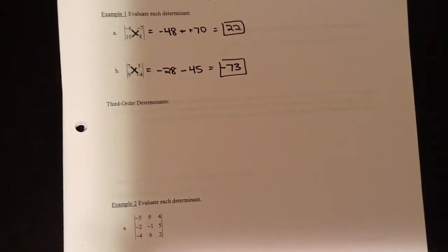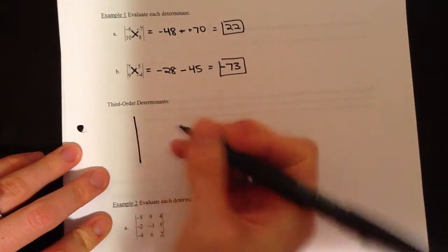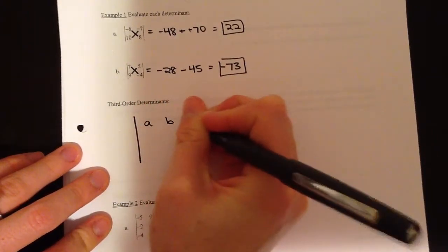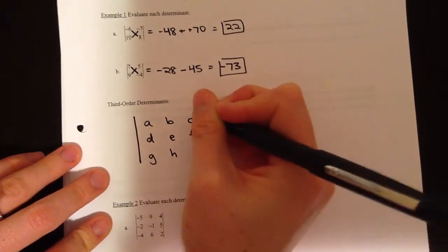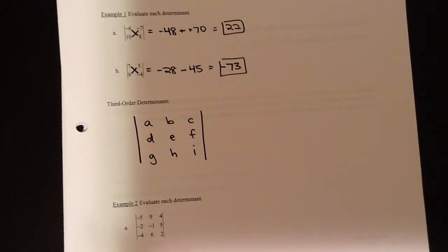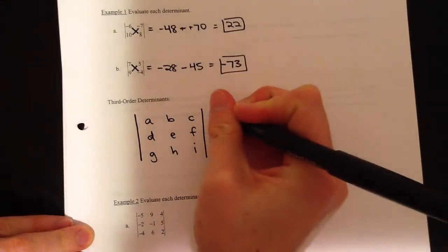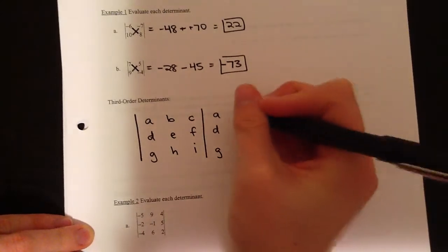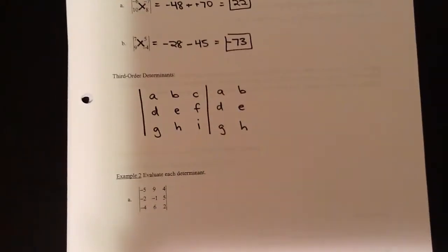When we do 3×3s, we get to have a little bit of fun. Third order determinants use something called the diagonal rule. Say we have a determinant with elements A, B, C, D, E, F, G, H, I — there are a lot more letters when dealing with 3×3 determinants. The first thing we do when solving these is rewrite the first two columns outside of the determinant: the A, D, G column and the B, E, H column. That's always the first step.